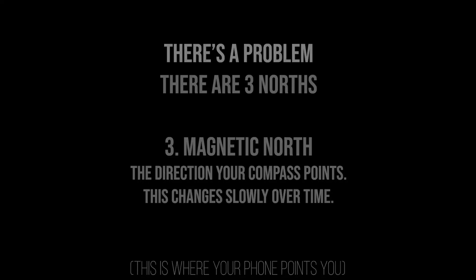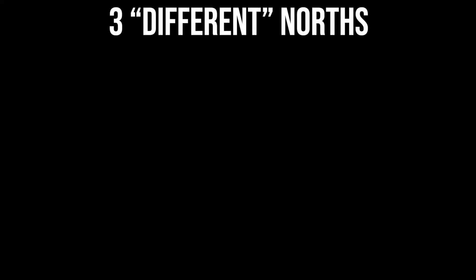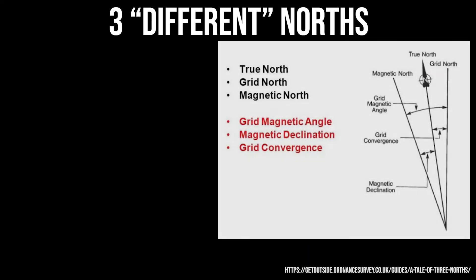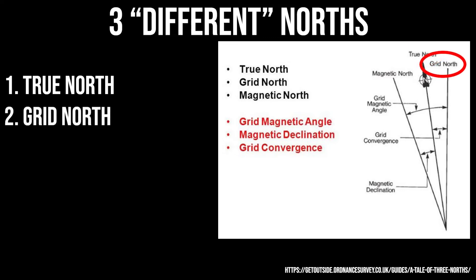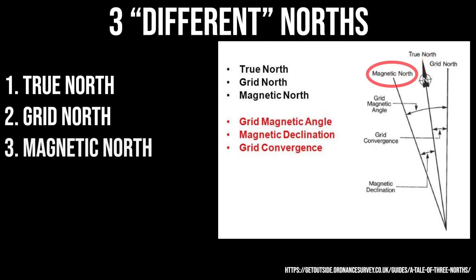This direction changes slowly over time. So these three different norths can be visualized like we see here: true north at the top, grid north off to the right, and magnetic north off to the left. It should be noted that magnetic north does move — up until 1990 it moved about nine miles a year. Right now it's moving 30 to 40 miles a year. So based on your location, these lines can be different — it's something you need to check.